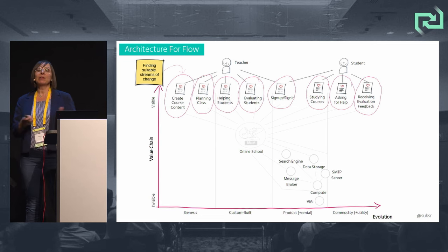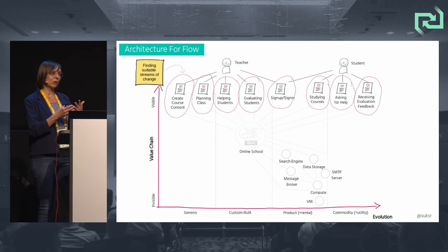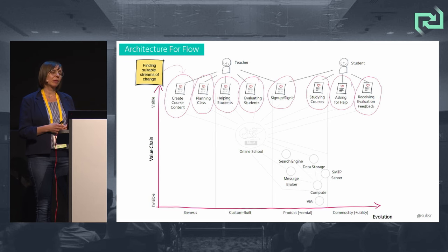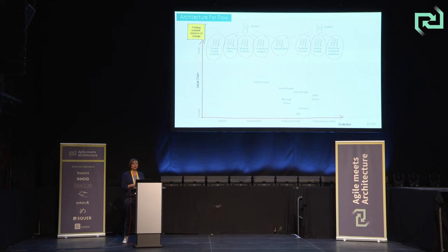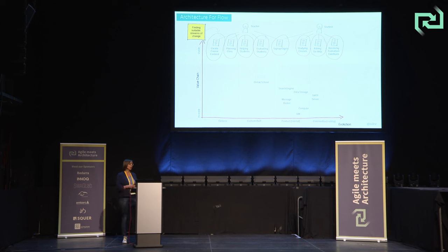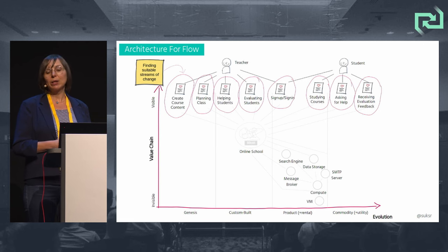We can use the previously created Wardley map of the online school solution as a structure that guides us through the optimization process. Optimizing a system for fast flow of change requires knowing where the most important changes in our system occur — the streams of changes. Stream types can vary in every organization, ranging from task, role, activity, geography, or customer-segment oriented types. In our current online school example, we focus on the activity streams of changes represented by the user needs of our Wardley maps.